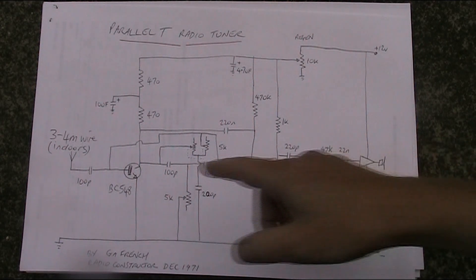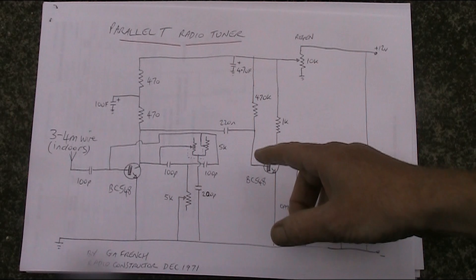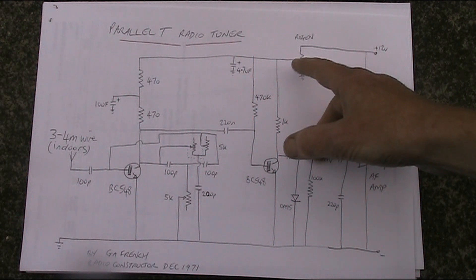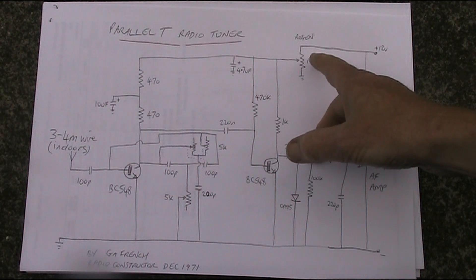So it was a very simple receiver, two transistors, and there was regeneration as well. You could adjust the voltage and when you had enough current going in then the thing would start to oscillate. I'll demonstrate that later on.